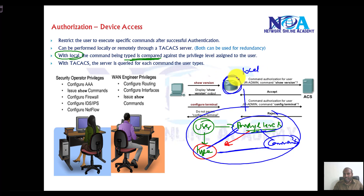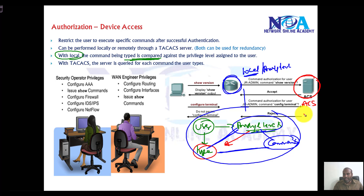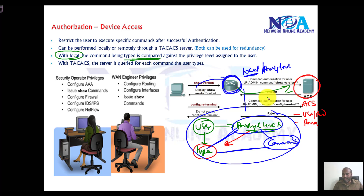We can configure privilege levels and define commands locally on the router, or we can do the same on external ACS servers. On the ACS server, we create user accounts, assign privilege levels, and every time a user types a command, we tell the router to contact the ACS server to verify whether that user can execute that command.